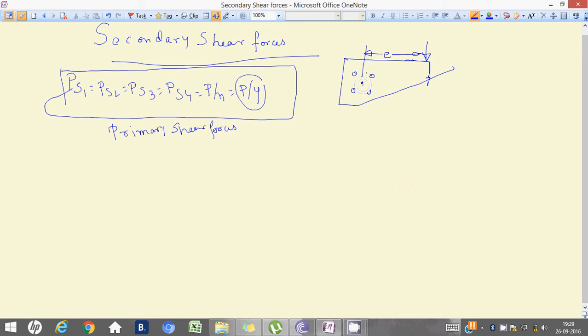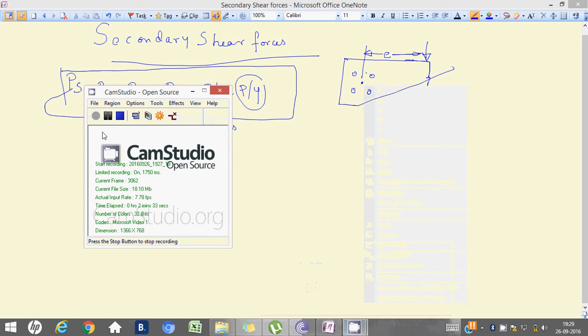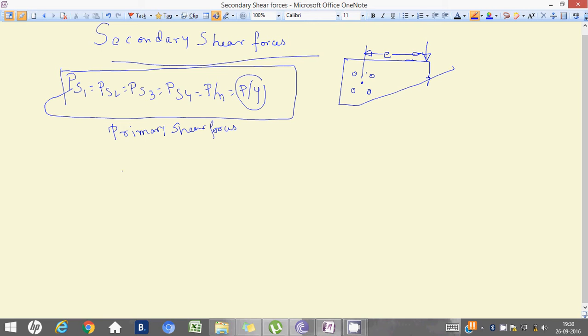So, as we have shifted, in this case we have seen this thing, where it has been at a certain eccentricity. So, due to which we have seen in this point, in this point, in this point and in this point, that it is p by 4 in case of the primary shear forces.